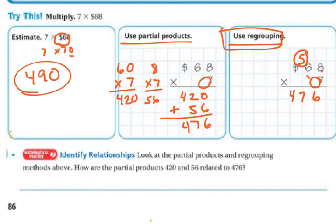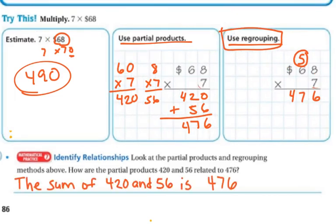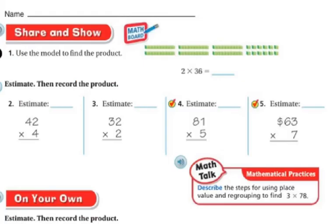Let's identify relationships. So let's look at the partial products and the regrouping methods above. How are the partial products 420 and 56 related to 476? Well, the sum of 420 and 56 is 476. So by taking the two partial products and adding them together, we get the actual answer or the final product.